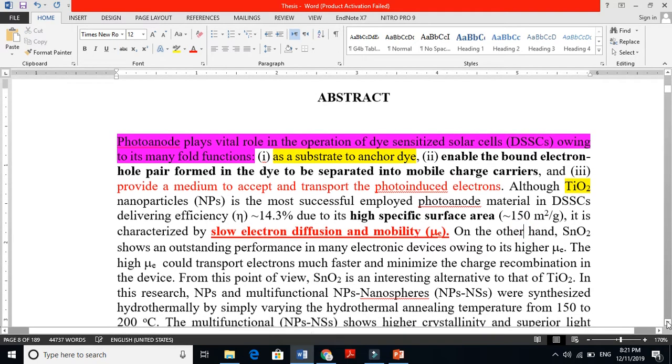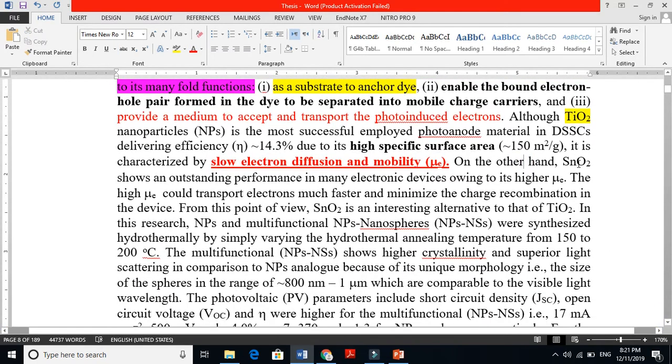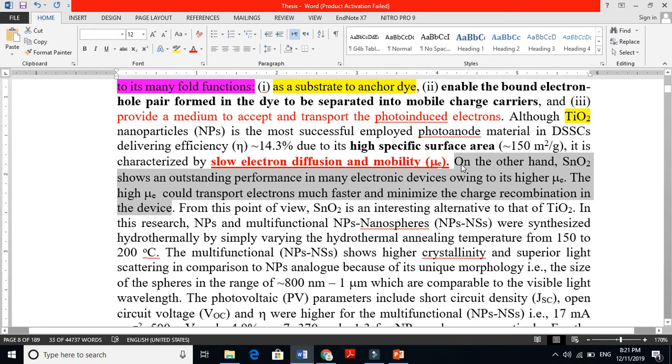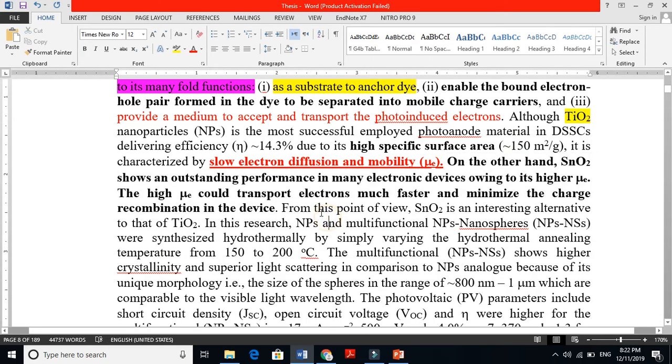Now I am bringing my other point - that on the other hand SnO2, which is my work, shows an outstanding performance in many optoelectronic devices owing to its higher electron mobility. There is a problem for titania but it is beneficial for SnO2. The high electron mobility could transport electrons much faster and minimize the charge recombination in the device. I am now telling the beautiful things of my material, that is SnO2. From this point of view, SnO2 is an interesting alternative to that of titania.